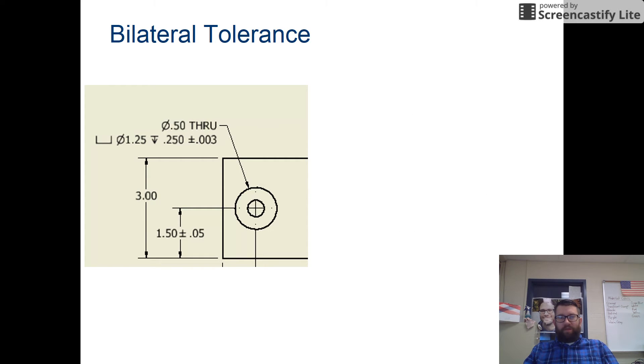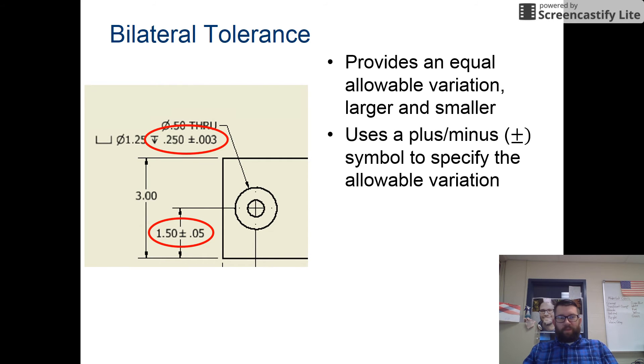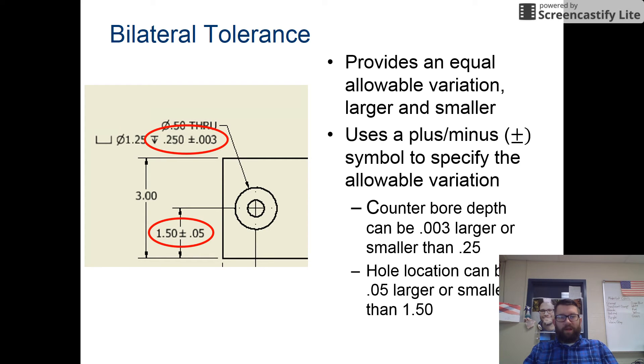Bilateral tolerances provide equal variation on each side, both larger and smaller. That's why we have the plus-minus there. In this case, the whole note here says 0.25 inches plus or minus 0.003 inches. And so anything that falls in between that is acceptable.